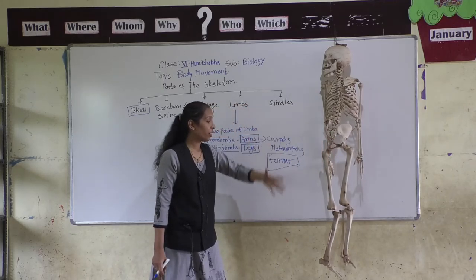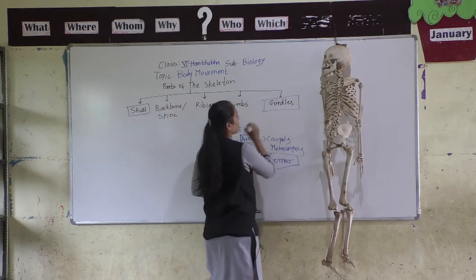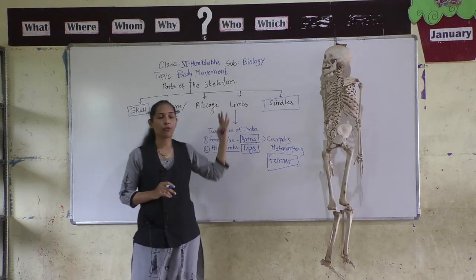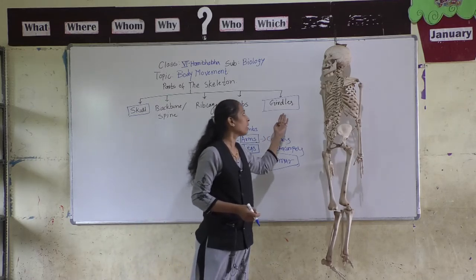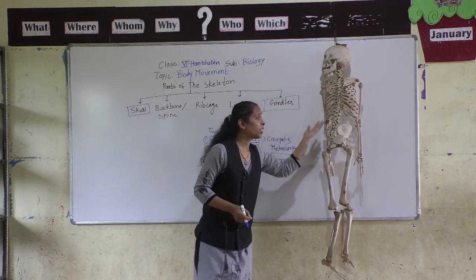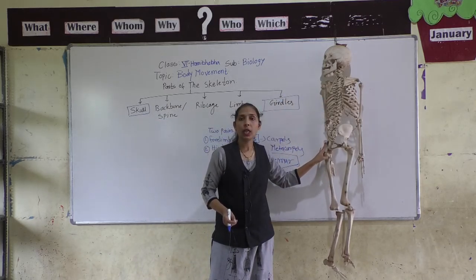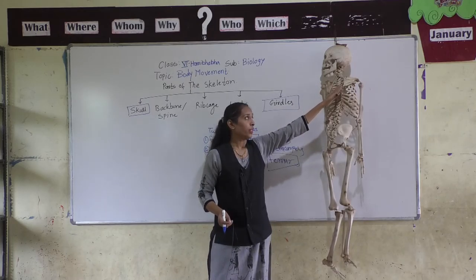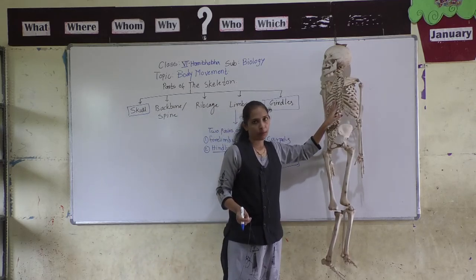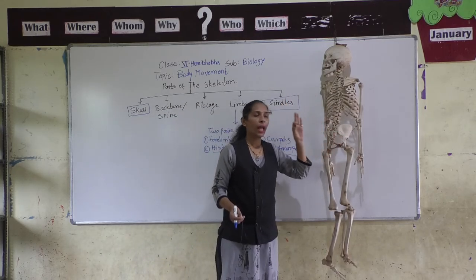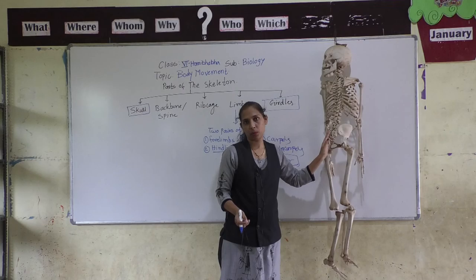With the help of these different bones, our whole body is made. The last part of the skeleton we will discuss is the girdles. There are two girdles in the human skeleton — the shoulder girdle and the pelvic girdle. The shoulder girdle connects the forelimbs or arms to the spine, while the pelvic girdle connects the hind limbs or legs to the backbone.